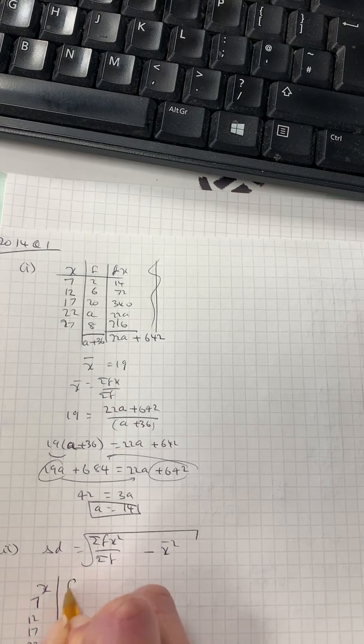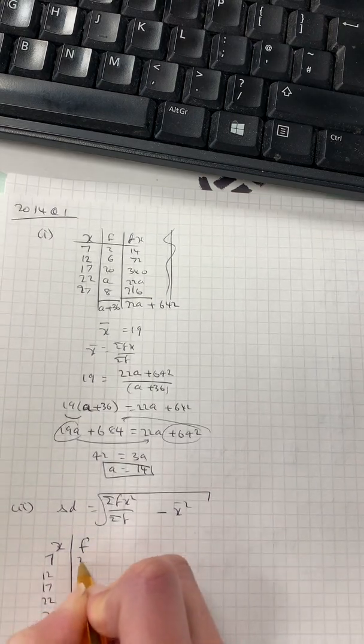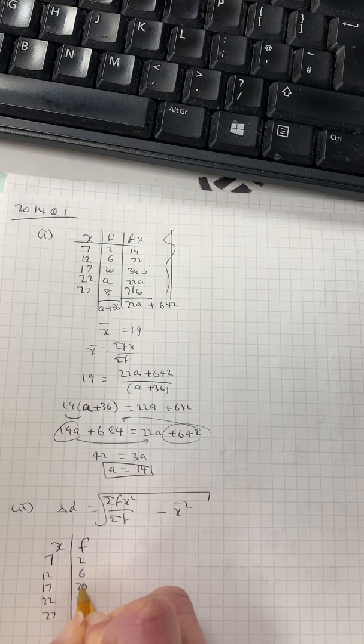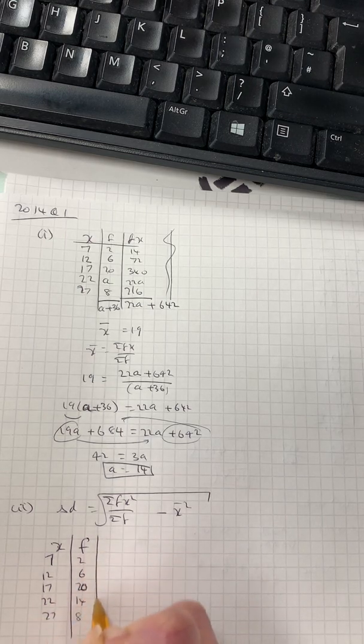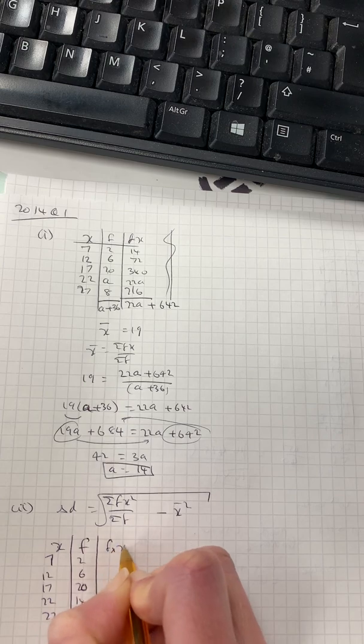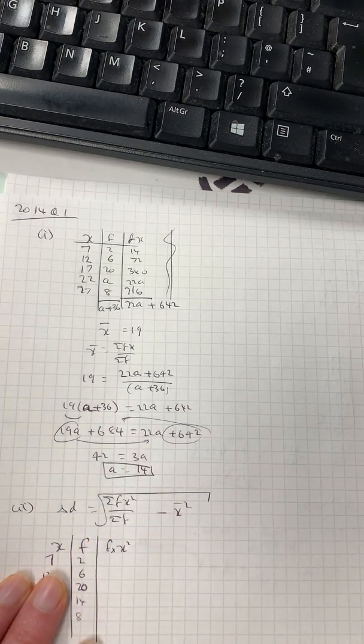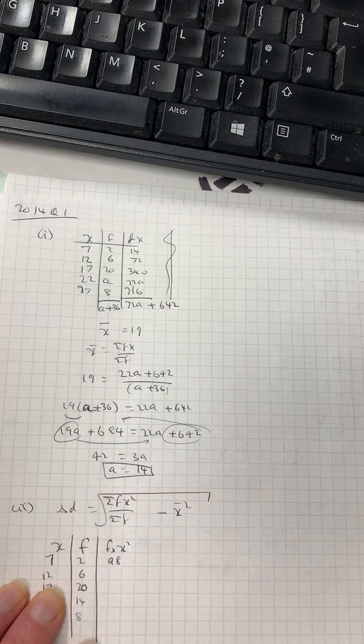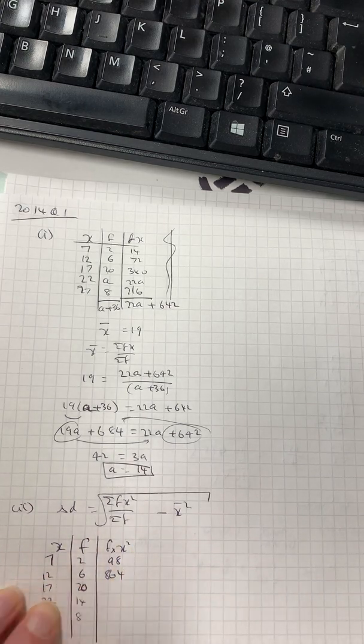So frequency, 2, 6, 20, 14, and 8. And I need f times x squared. So 7 squared times 2 is 98. 12 squared times 6 is 864.